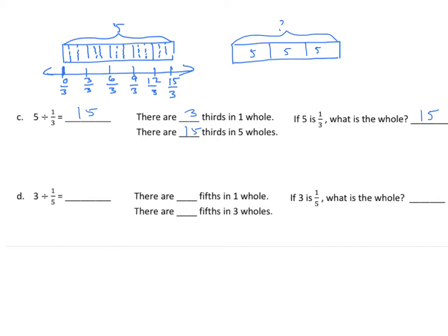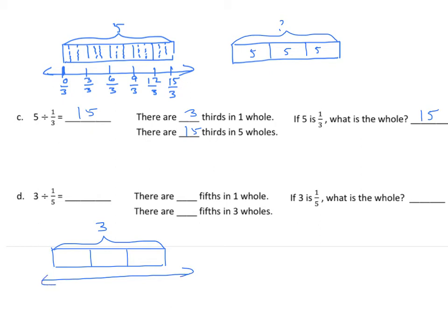We'll do another tape diagram: three divided by one-fifth. We make our tape diagram with three as our whole number, partition it into three parts, and bracket the three. We put a number line underneath and partition each whole into five equal parts. We label the number line: zero-fifths, one is five-fifths, two is ten-fifths, and three is fifteen-fifths.